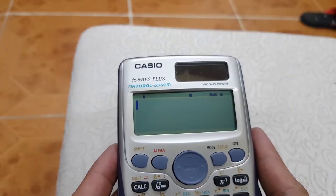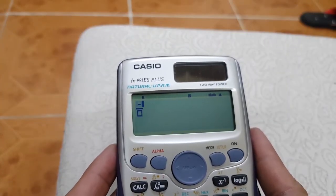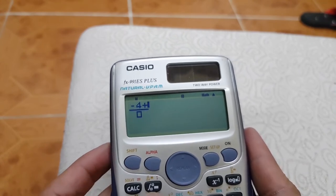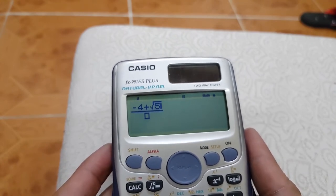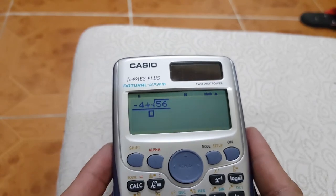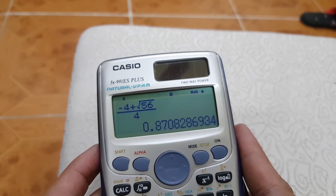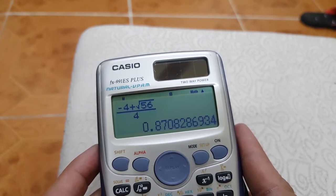So we are going to put it on the calculator. Negative 4, we start with plus, square root of 56, all over 4, and then get the decimal value for that. So approximately 0.87 to 2 decimal places.